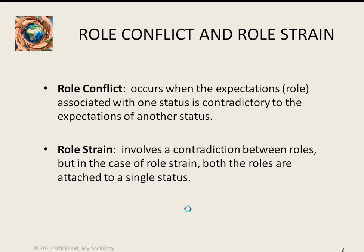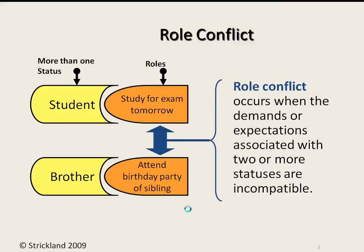Let's look at an illustration to clarify that a bit more. With role conflict we have two different statuses whose roles are contradictory. For example, suppose you had the status of student with the role to study for an exam tomorrow, and you also had the status of brother with a role expectation to attend your sibling's birthday party on the same day. Which one do you do? Do you follow the role expectations for student or for brother? They are contradictory — this is what we call role conflict.